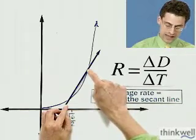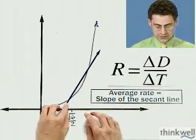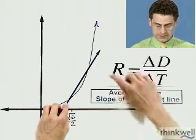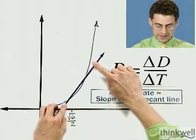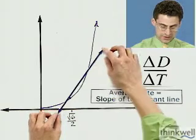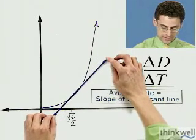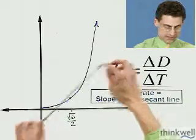But then we said, now, how do we get the instantaneous rate? Well, what we want to do is take that point and move it closer in. So you want to move that point closer in. And if you do that, see what happens? We start to get closer and closer.